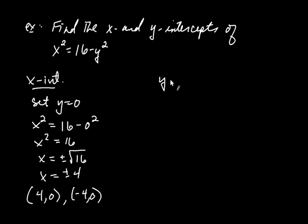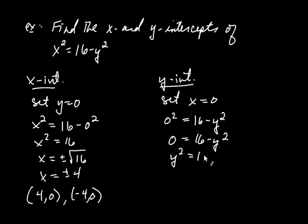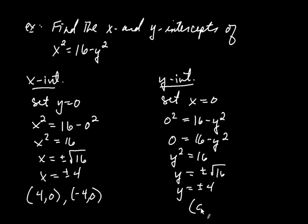Likewise for the y-intercepts. To find them, we set x equal to zero. So we have zero squared equals 16 minus y squared — I just replaced x with zero in the equation. Solving: zero equals 16 minus y squared, so y squared equals 16, meaning y equals plus or minus 4. That gives y-intercepts of (0, 4) and (0, -4).